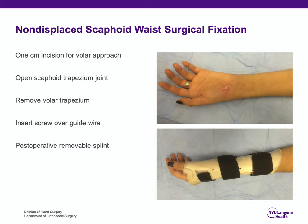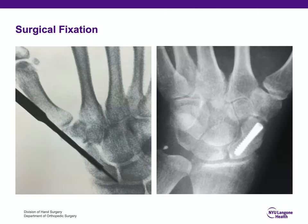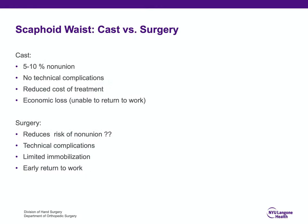This is an example of a non-displaced scaphoid waist fracture treated with a guide wire through a small incision, showing the drilling path to the fracture site and screw placement. For the non-displaced scaphoid waist fracture, casting has about a 5% non-union rate, no technical complications, and is less costly. However, there may be less economic loss with surgery because patients can potentially return to work sooner.